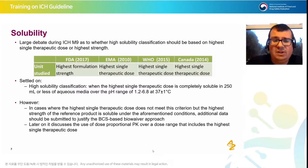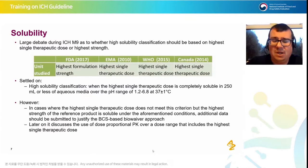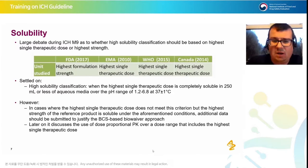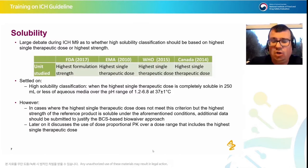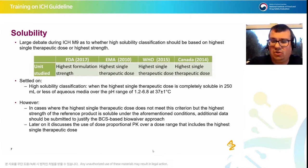The FDA's position was related to the fact that when you conduct a bioequivalence study you perform it at the single highest strength, whereas the rest of the world was looking at the dose the patient will see. What they settled on was that the highest single therapeutic dose must be completely soluble in 250 mL or less of aqueous media over the range of pH 1.2 to 6.8 at 37°C. However, they gave what I'd call a 'get out of jail free card': in cases where your highest single therapeutic dose doesn't meet the criteria but the highest strength of the reference product would be soluble under those conditions, you can submit additional data — including dose-proportional PK — to justify your BCS-based biowaiver approach.